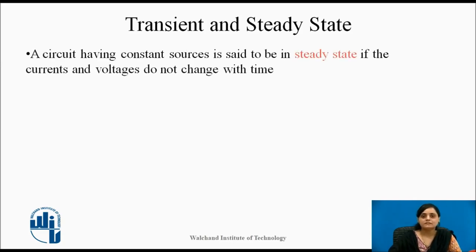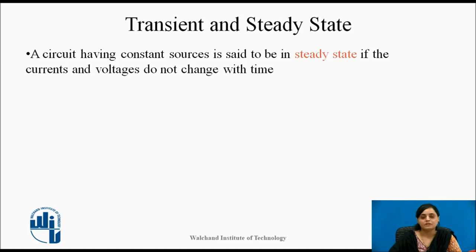A circuit having constant sources is said to be in steady state when the current flowing through the circuit, or the voltage across any of the elements, does not change with respect to time. That particular circuit will be called as being in steady state.